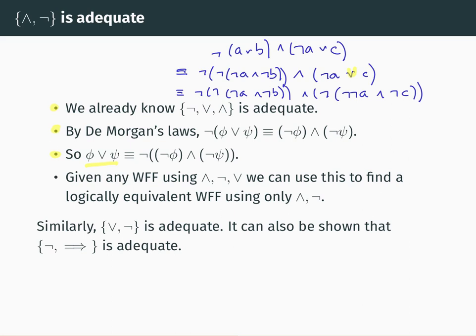So given any well-formed formula, first we could use our result from the previous slide to show it's logically equivalent to a well-formed formula using only NOT, OR, and AND. Then we could use this technique to get rid of OR and show that the formula is logically equivalent to one which only uses AND and NOT. Using a similar method with the other de Morgan's law, you can also show that {OR, NOT} is adequate, and you can show that {NOT, implies} is adequate as well.